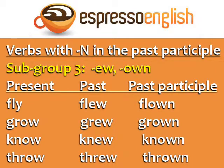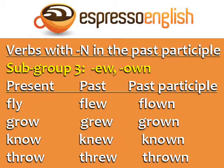Subgroup three: verbs ending in EW in the past and OWN in the past participle. Fly, flew, flown. Grow, grew, grown. Know, knew, known. Throw, threw, thrown.